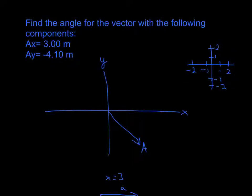In this problem it says find the angle for the vector with the following components: AX is 3 meters and AY equals negative 4.10.